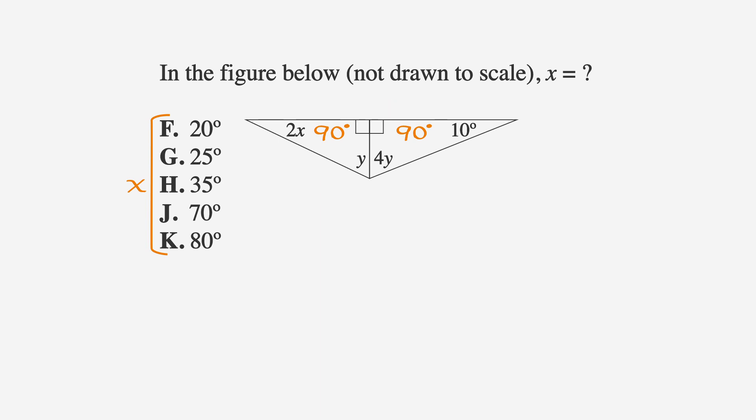If we start in the middle and choose answer choice h, and say that x is equal to 35, then the angle shown in the picture, 2 times x, would be 2 times 35. We get 70.